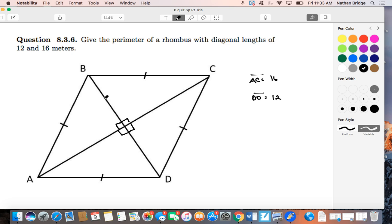And also that they are bisectors of one another. So AC bisects BD, and BD bisects AC. So if we named this point O, for example, then AO is congruent to OC, and BO is congruent to OD.